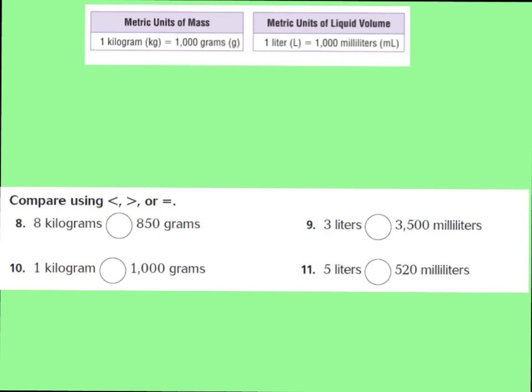So for this set of questions, for number eight through 11, we're going to look at comparing using greater than, less than, or equal to. So for number eight, it says eight kilograms. Is it greater, less, or equal to 850 grams? Well, I'm going to look at my chart and I can see that one kilogram is equal to 1,000 grams. So eight kilograms would equal 8,000 grams. So I know 8,000 is much greater than 850 grams. Therefore, I know 8 kilograms is greater than 850 grams.